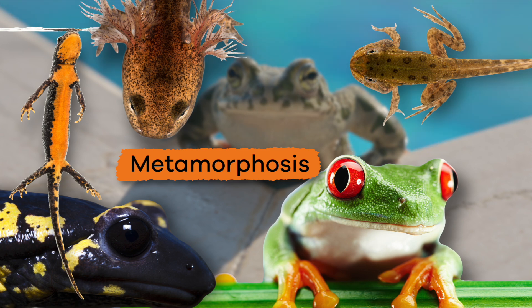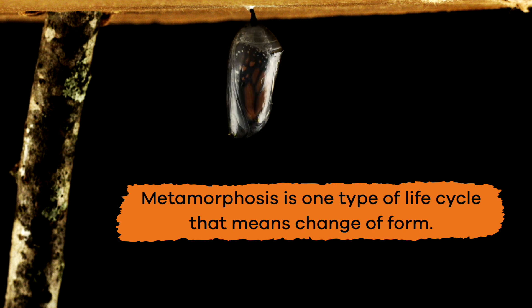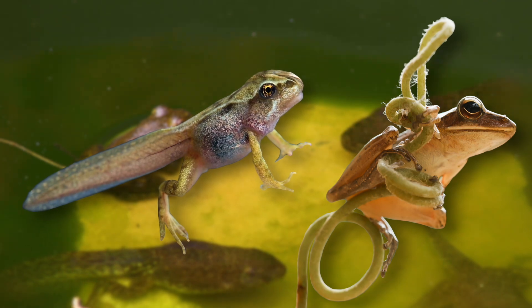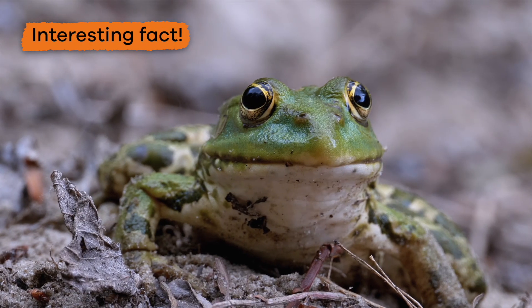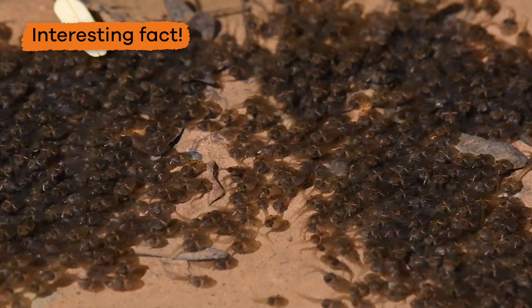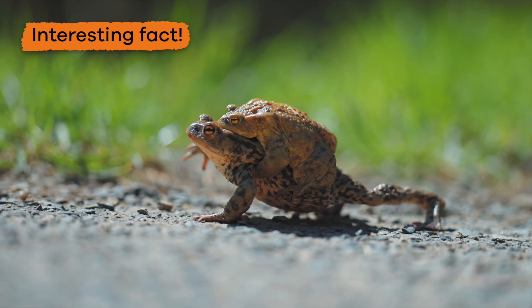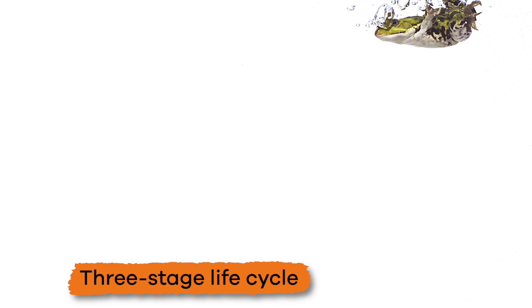Frogs and other amphibians go through a special type of life cycle called metamorphosis. Metamorphosis is one type of life cycle and means change of form. Because frogs go through metamorphosis, they change their appearance throughout their life. And here is an interesting fact: each stage of metamorphosis includes adaptations to help a species survive to adulthood. Pretty cool, right?